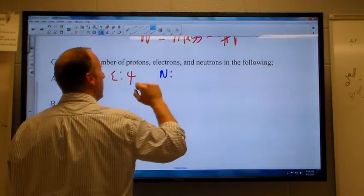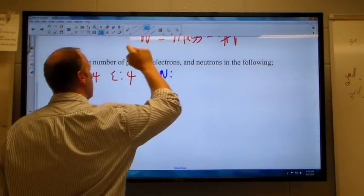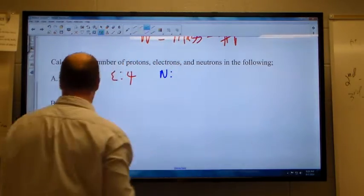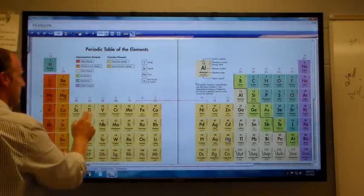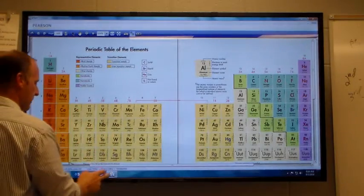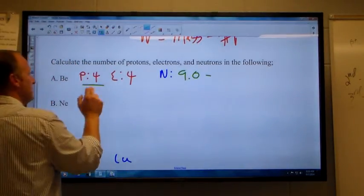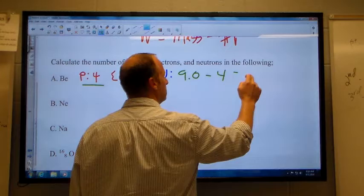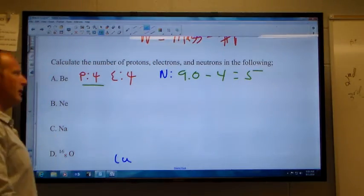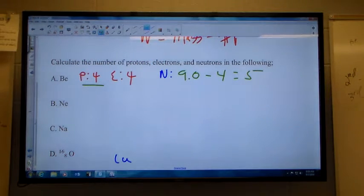And so for the number of neutrons, which is what we're looking at here, I take the big number. What is the big number? Go to the first decimal, 9.0, and I'm going to subtract out the number of protons. Counting seven atomic particles. We're an atom: protons four, electrons four, neutrons five.